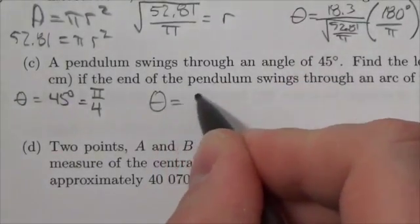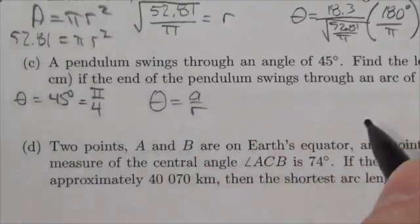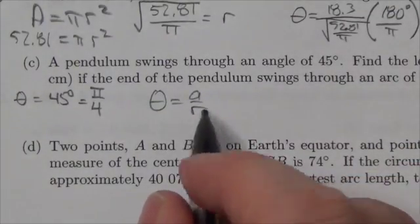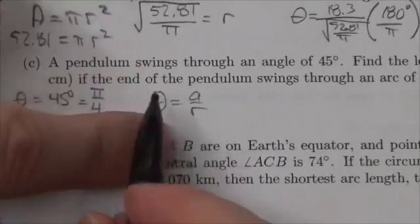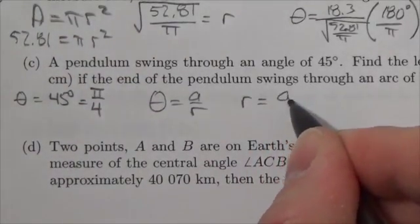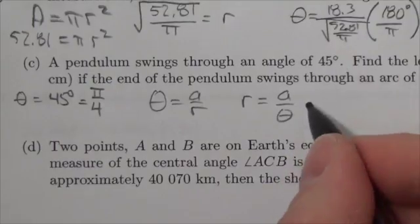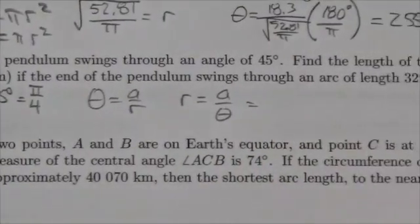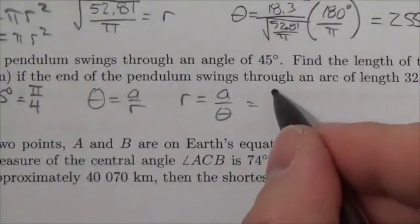The formula here is theta is equal to ar, and I'm looking for r here. So I can swap the theta and the r and get that r is equal to a over theta. This becomes a fairly easy substitution here.